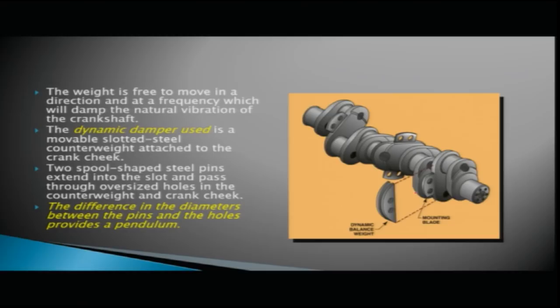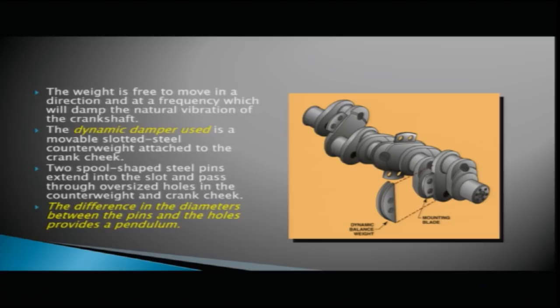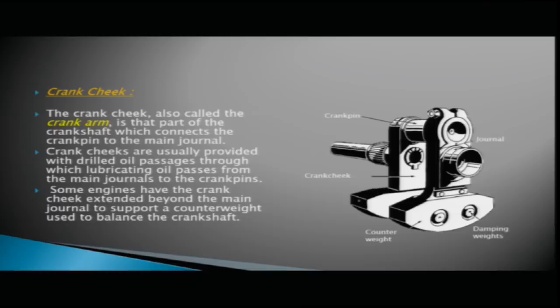The dynamic damper used is a movable slotted steel counterweight attached to the crankshaft cheek. Two spool-shaped steel pins extend into the slot and pass through oversized holes in the counterweight and crank cheek. The difference in diameter between the pins and the holes provides a pendulum effect.